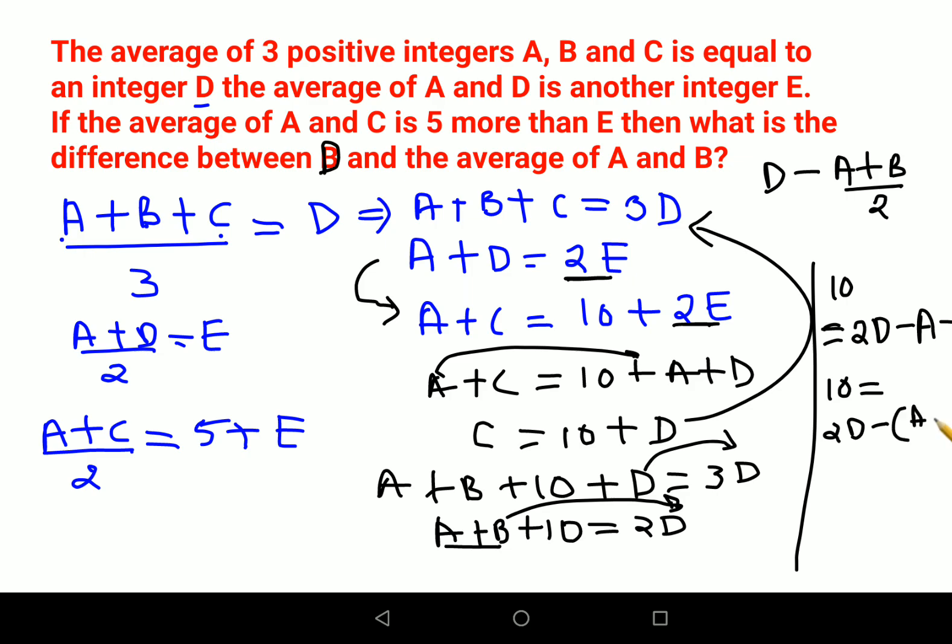I want D and (A+B)/2. Dividing both sides by 2, we get 10/2 = 5 equals D - (A+B)/2. Here we got the answer: D - (A+B)/2 = 5.